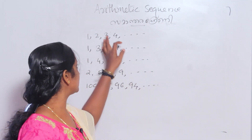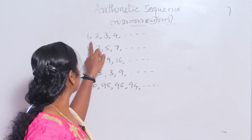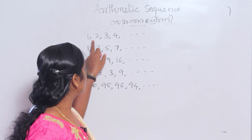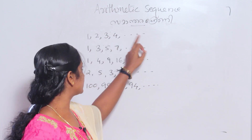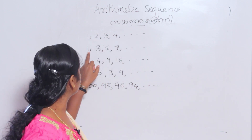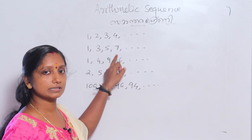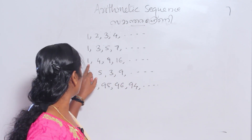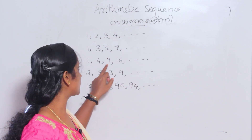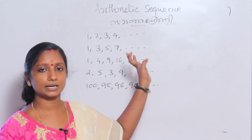We have three sets of numbers. The first set is 1, 2, 3, 4, etc. The second set is 1, 3, 5, 7, etc. The third set is 1, 4, 9, 16, etc.